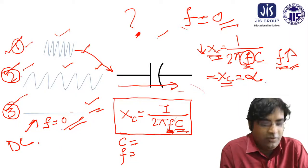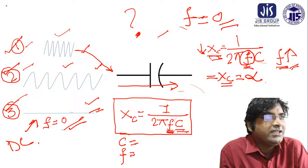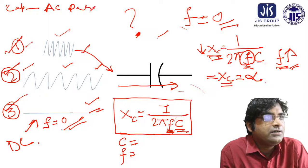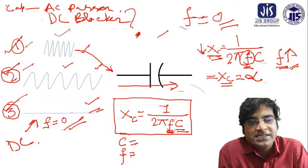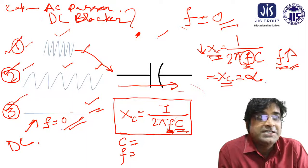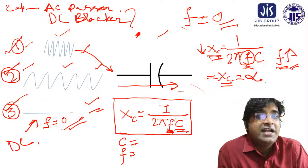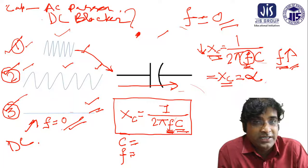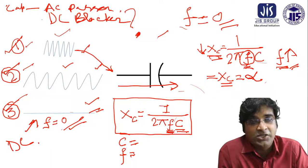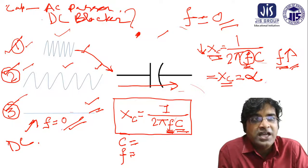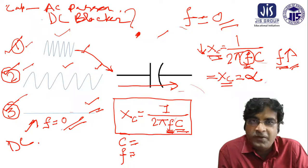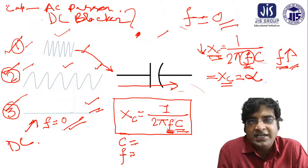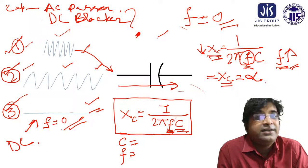We can conclude that the capacitor is an AC passer and a DC blocker. Capacitor is AC passer and DC blocker. These things we can understand. The same logic applies in reverse for inductance, because in that case XL equals 2πfL — everything is vice versa. So from this video we understand the capacitor is an AC passer and DC blocker.